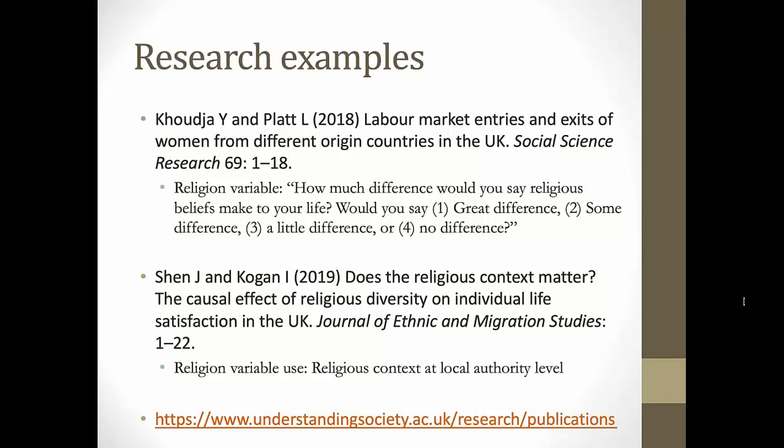Another paper using the UK HLS is by Shannon Kogan. They use the religious affiliation and religious background measure to create neighbourhood-level measurements of religion — specifically the share of people from the same religion in the neighbourhood for the share of Muslims and the share of non-religious people — and look at how this affects individual life satisfaction. You can also search the website for other publications that use religion measures.